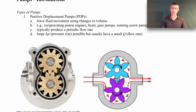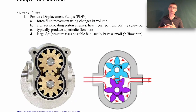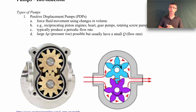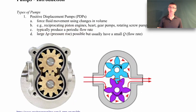A bellows — used at fireplaces to stoke a fire and get more oxygen into it — is another example of a positive displacement pump; it's basically an accordion-looking device, and an accordion itself is also an example. Positive displacement pumps typically produce a periodic flow rate. Think about your heart — it's not a continuous flow of blood, it's pulsatile. That's pretty typical for positive displacement pumps.